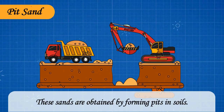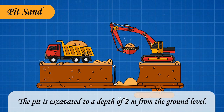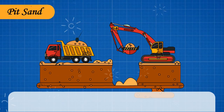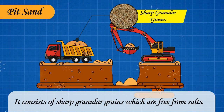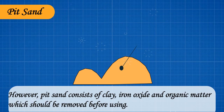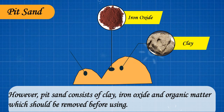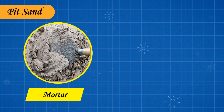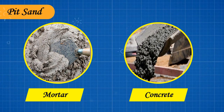Pit sand: These sands are obtained by forming pits in soils. The pit is excavated to a depth of 2 meters from the ground level, and the sands lying below this are taken for construction purposes. It consists of sharp granular grains which are free from salts. However, pit sand consists of clay, iron oxide, and organic matter which should be removed before using. Pit sand is suitable for mortar or concrete works.